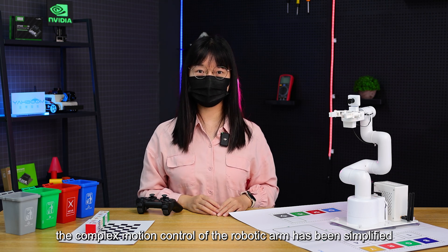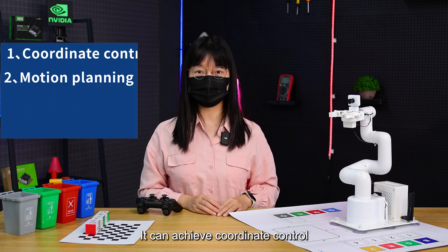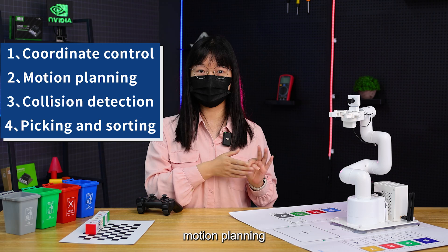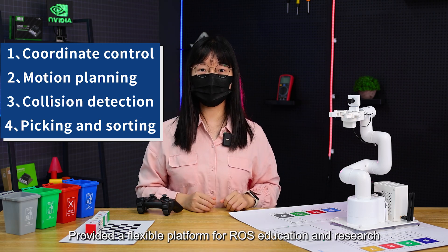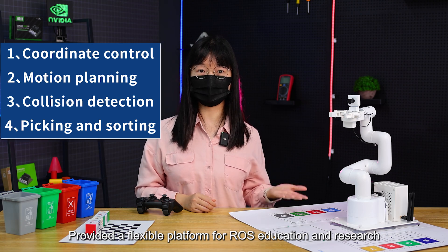By integrating ROS robot system and inverse kinematics algorithm, the complex motion control of the robotic arm has been simplified. It can achieve coordinate control, motion planning, collision detection, and picking and sorting, providing a flexible platform for ROS education and research.